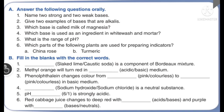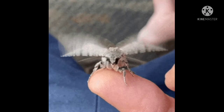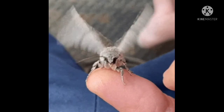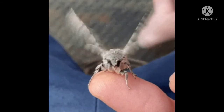Slaked lime is a component of the Bordeaux mixture. Methyl orange turns red in an acidic medium. Phenolphthalein changes color from colorless to pink in basic medium. Sodium chloride is a neutral substance. pH 1 is strongly acidic. Red cabbage juice changes to deep red with acids and purple with neutrals.